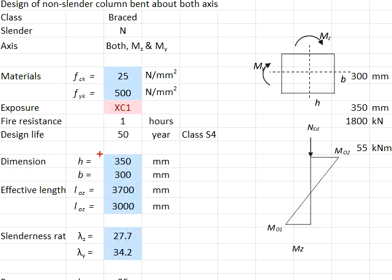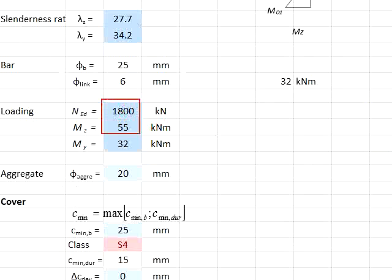The dimensions 350 by 300, the effective length 3.7 meters and 3 meters for effective length in the z and y directions respectively. The slenderness ratios are given here and the loadings are given here.